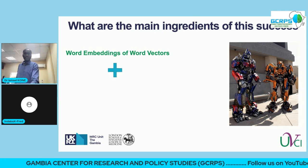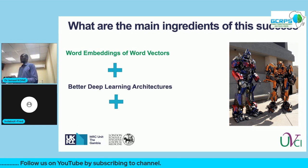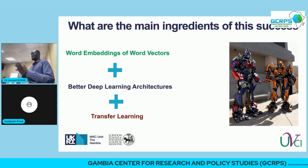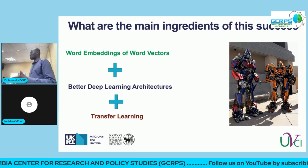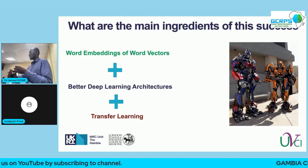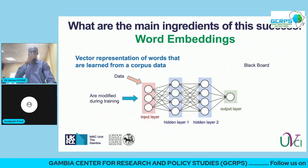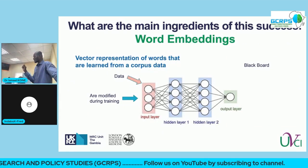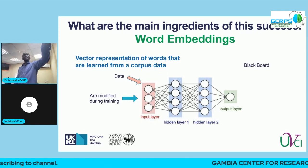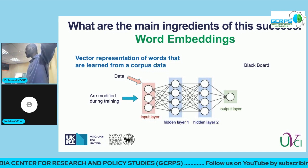Another key ingredient is a better deep learning architecture — the transformer is a very good example. And then there is transfer learning, one of the most powerful concepts in deep learning, because it can save a lot of resources, time, and money. Concerning word embeddings: these are vectors that represent words, but this representation has a semantic meaning. In a neural network, the input data is processed layer by layer until the output.